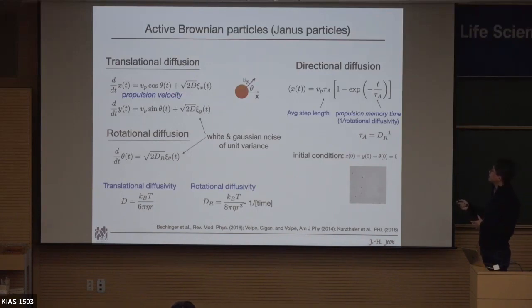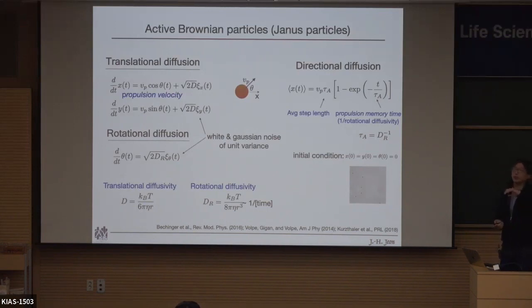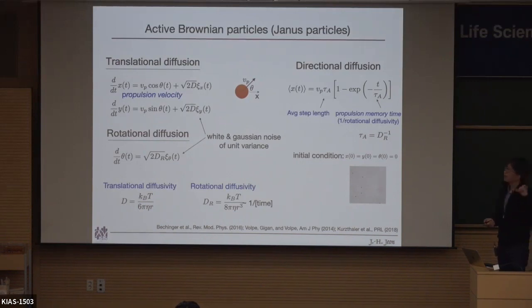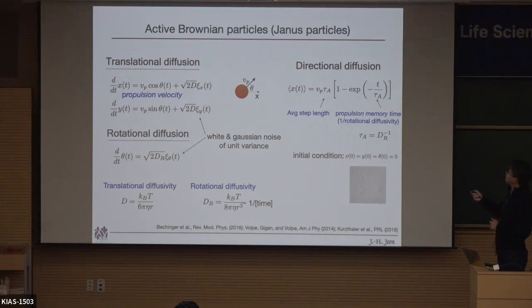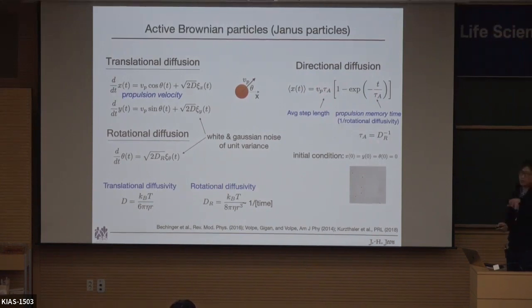Because of this coupling, it shows directed motion. If the rotation is very slow, the particle undergoes directional motion due to its propulsion. But if rotation is very fast, it quickly loses memory. Analyzing this equation, the directional diffusion can be understood as follows: the average step length is the self-propulsion velocity times the memory time tau_a, where tau_a is the inverse of rotational diffusivity.